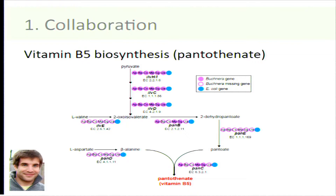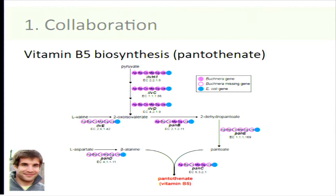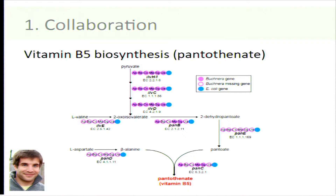We see that all Bucknera have lost the ability to make 2-oxoisovalerate from valine, but they retain the ability to make it from pyruvate. All of them have lost PAN-E, to convert 2-hydroxopantoate to pantoate, and they've all lost the ability to synthesize beta-alanine. Three of the six Bucknera have lost PAN-B and three have lost PAN-C, but those that retain these genes retain identically fragmented pathways. This is a common pattern in these symbionts: fragmented biosynthesis pathways that are apparently non-functional but conserved over evolutionary time, suggesting they are in some way functional.